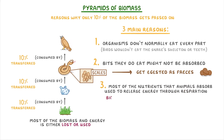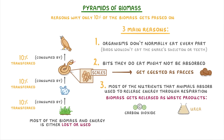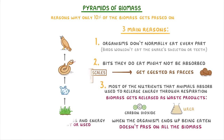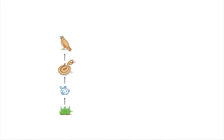This means that the biomass gets released as waste products like carbon dioxide and urea, rather than being stored within the organism. So when the organism ends up being eaten by something, it doesn't pass on all the biomass that was consumed throughout its life, because it's been using most of it for everyday functions.